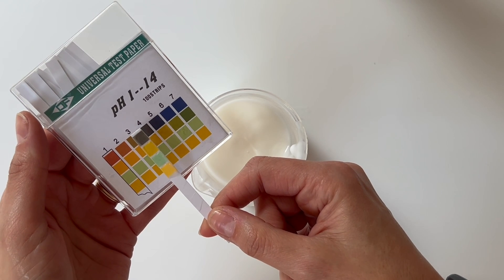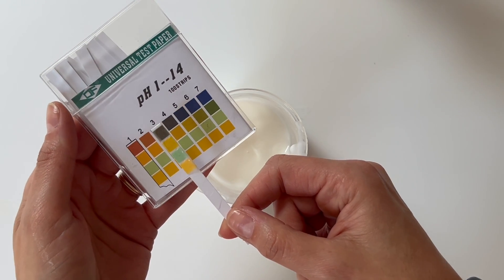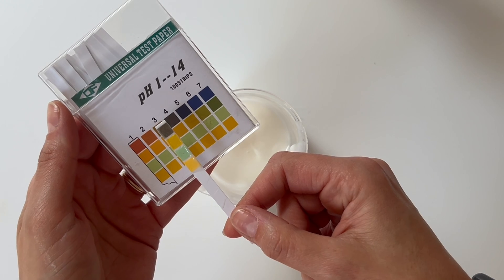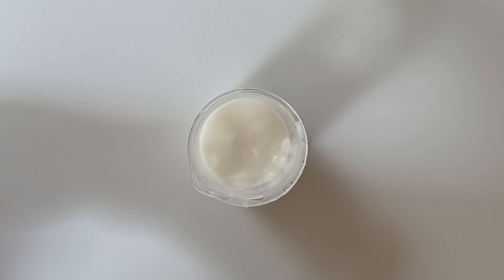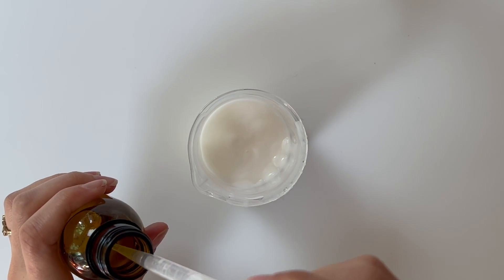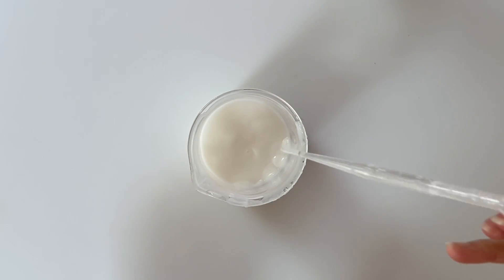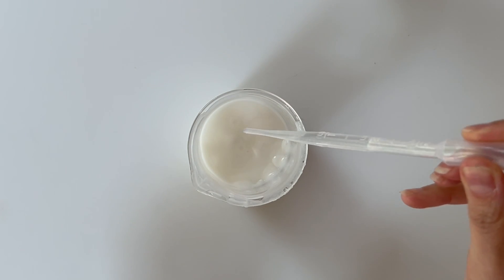Now this is a little low. We want it to be about 5.5 and that's sitting at around 4. So we're going to add a buffer. This is a 10% sodium hydroxide and water solution.